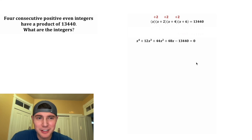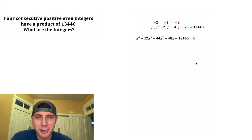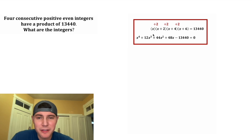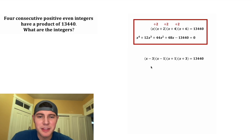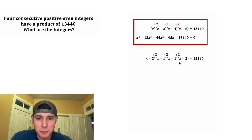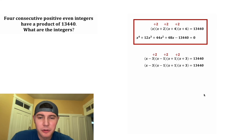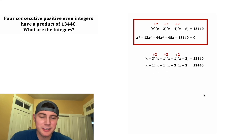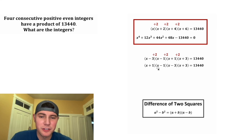Let me show you a shortcut. Instead of using x, x+2, x+4, x+6, let's express the four consecutive even integers as x-3, x-1, x+1, and x+3. They're still two apart from each other, just expressed differently.